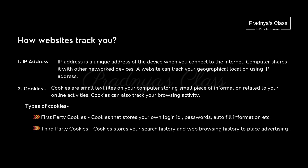Whenever we search something on a website, we get similar kinds of suggestions. It means websites will track you. How do they track? Using IP address — it's a unique address of our device. The second way of tracking is using cookies, which is a text file stored in our system that stores our browsing information.